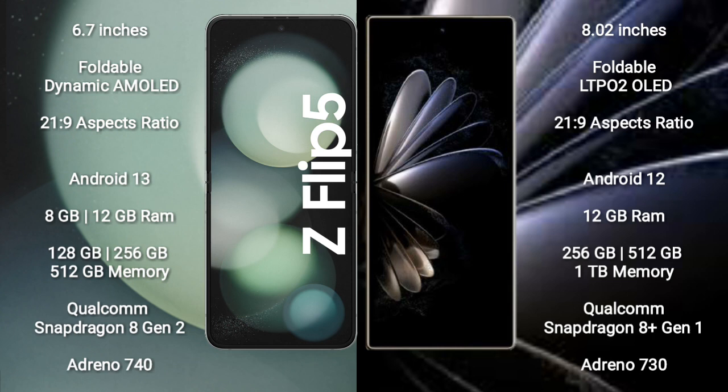Xiaomi Mix Fold 2 comes with 12GB RAM and 256GB, 512GB, or 1TB internal storage, powered by the Qualcomm Snapdragon 8 Gen 1 processor with Adreno 730 GPU.